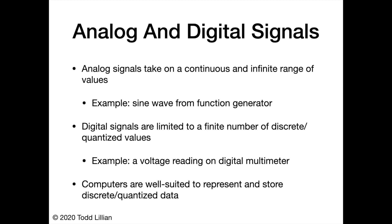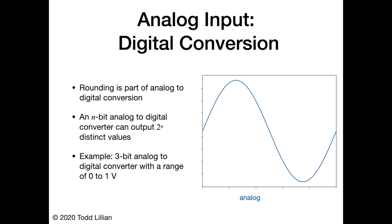I've used some terms like analog and digital — what do we mean by these? Analog signals take on a continuous or infinite range of voltages. For example, the sine wave from a function generator takes on a wide range of voltages from its minimum at the trough to its peak. Digital signals, however, are limited to a finite number of discrete or quantized values. For example, voltage readings from a digital multimeter are limited to the three or four significant figures displayed on the screen. Computers are well suited to represent and store this discrete, quantized digital data. Rounding is a significant part of the analog to digital conversion process.